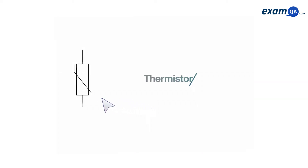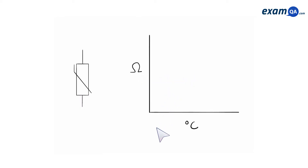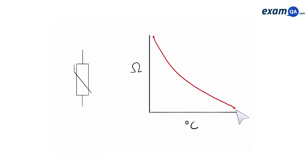This component is a thermistor. The resistance of a thermistor changes based on the temperature of the surroundings. You will usually find them in things like circuit boards within a computer, and their main function is to control when a fan or a light is turned on and off when the temperature of the computer is too high. With a thermistor, when temperature is low, the resistance is high, and when temperature is high, the resistance is low.